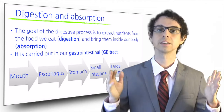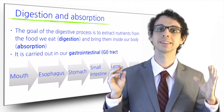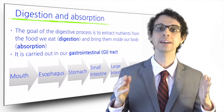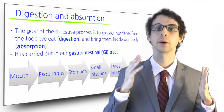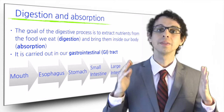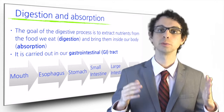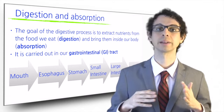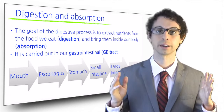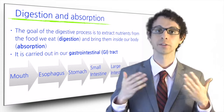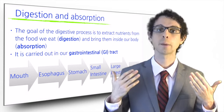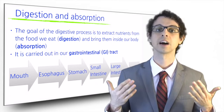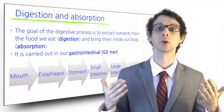The GI tract, at its very essence, is a tube about seven meters long that connects our mouth to our anus. This long tube is made of four major anatomically distinct parts: the esophagus, the stomach, the small intestine, and the large intestine or colon.